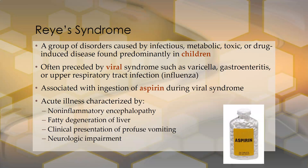Reye syndrome is a group of disorders caused by infectious, metabolic, toxic, or drug-induced disease found predominantly in children. It is often preceded by a viral syndrome such as varicella (chickenpox), gastroenteritis, or an upper respiratory tract infection like the flu. It is associated with the ingestion of aspirin during the viral syndrome — aspirin used to be commonly given to children, but if you look now, there is no aspirin in any children's medications. The acute illness is characterized by non-inflammatory encephalopathy, fatty degeneration of the liver, and a clinical presentation of profuse vomiting and neurologic impairment.